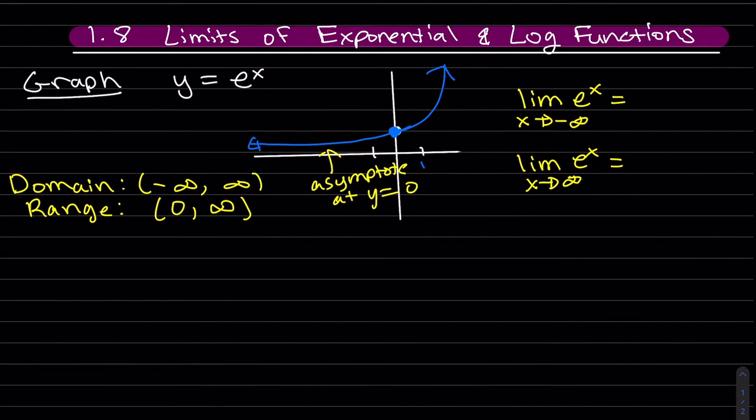You can see the graph does something different on each end. So as x is approaching negative infinity, we can see the y value is approaching 0. And as x is approaching infinity, it's going to positive infinity.